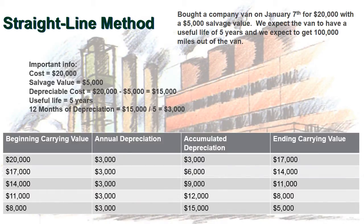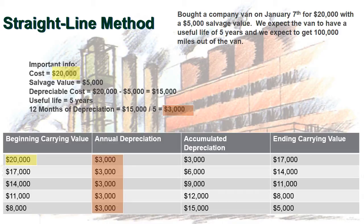Looking at the depreciation table: we have our beginning carrying value of $20,000 — the cost of the asset. Annual depreciation is $3,000 every single year. Accumulated depreciation is all the depreciation taken on the asset up to that point. The ending carrying value is what appears on the balance sheet. Each year we take $3,000, and at the end of the asset's life the ending carrying value is $5,000 — exactly the same as the salvage value. That's the straight-line method.